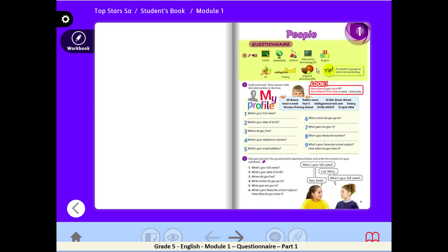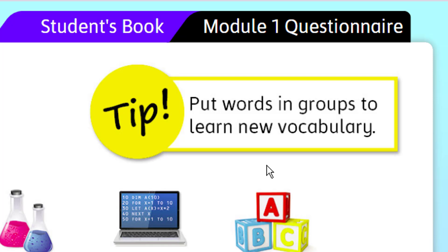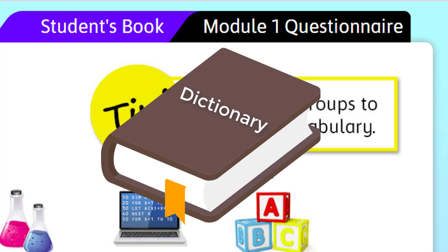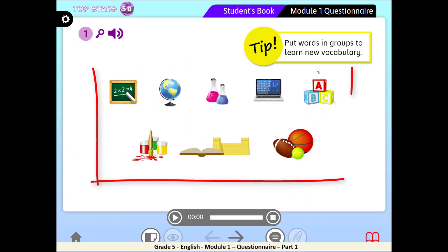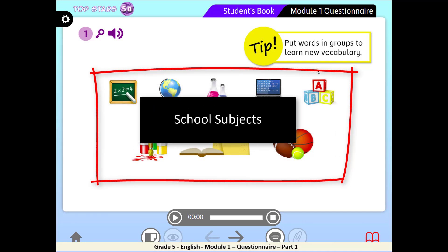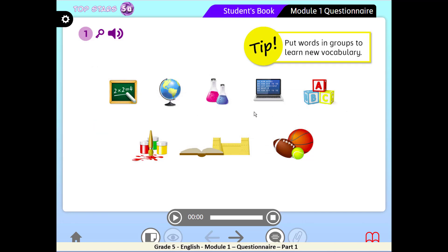Open your books, page 7, activity 1. Look at the tip box here: put words in groups to learn new vocabulary. From now on, I want every one of you to create your own dictionary and sort your words into groups, like the words we're going to study today — they all belong to one group: school subjects. When you look here you will find 8 pictures, each referring to a school subject. Let's look at each picture and guess what subject it is.